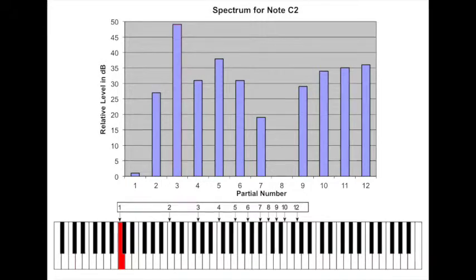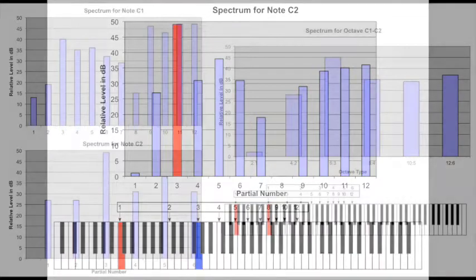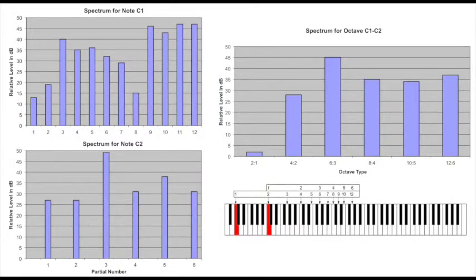C2 shows a very large amount of partial 3. Considering the spectra for both C1 and C2, the pair of partials with the greatest amplitude is clearly 6-3.